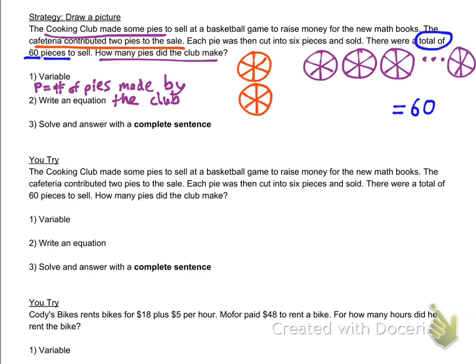So let me write equals 60 there at the end. A total of 60 pieces. Let's look at the picture to figure out how many pieces there are. Well, there are 12 pieces from the cafeteria, and there are six pieces per pie from the cooking club.